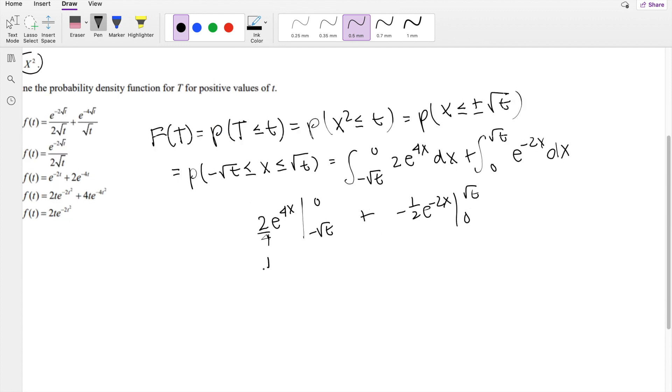So this one upper limit here is going to give you 1 half e to the 0 power, which is just 1, minus 1 half e to the 4, negative root t. Plus, right here the upper limit is going to give you negative 1 half e to the negative 2 root t, minus, 2 negatives make a positive, 1 half e to the 0, which is just 1, so that's 1 half.